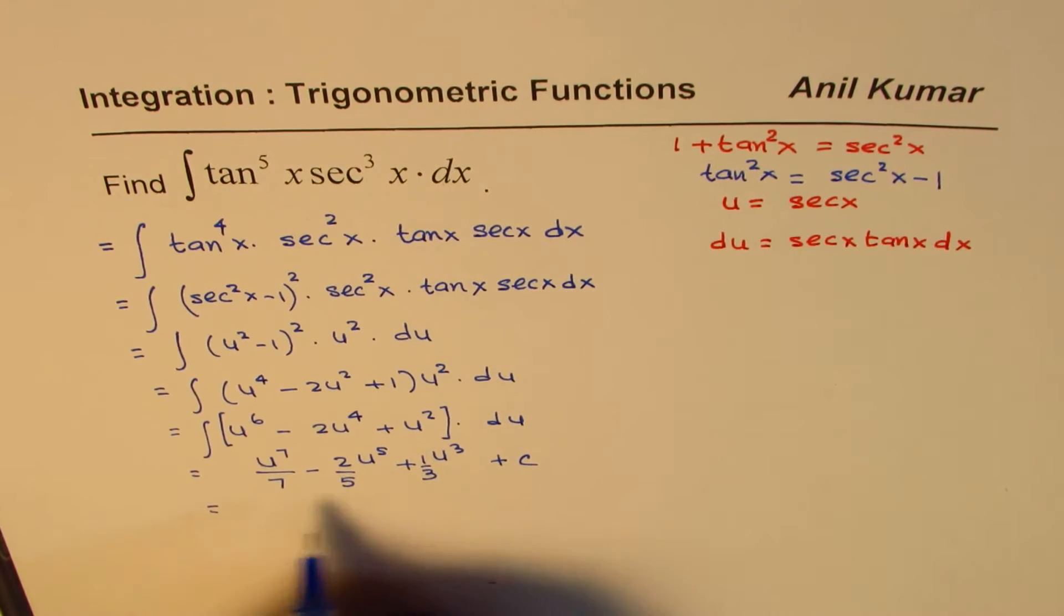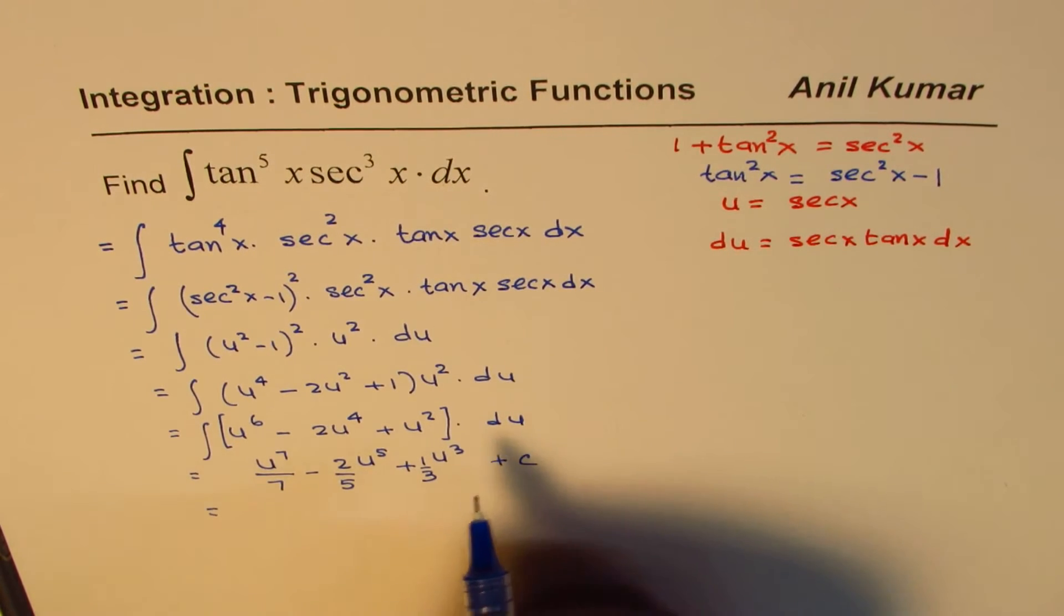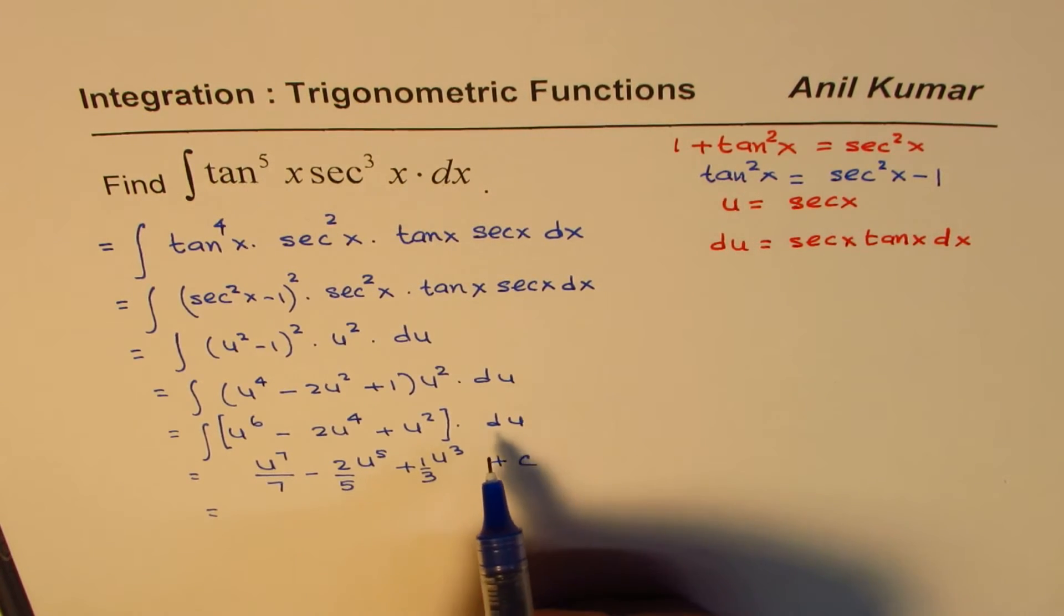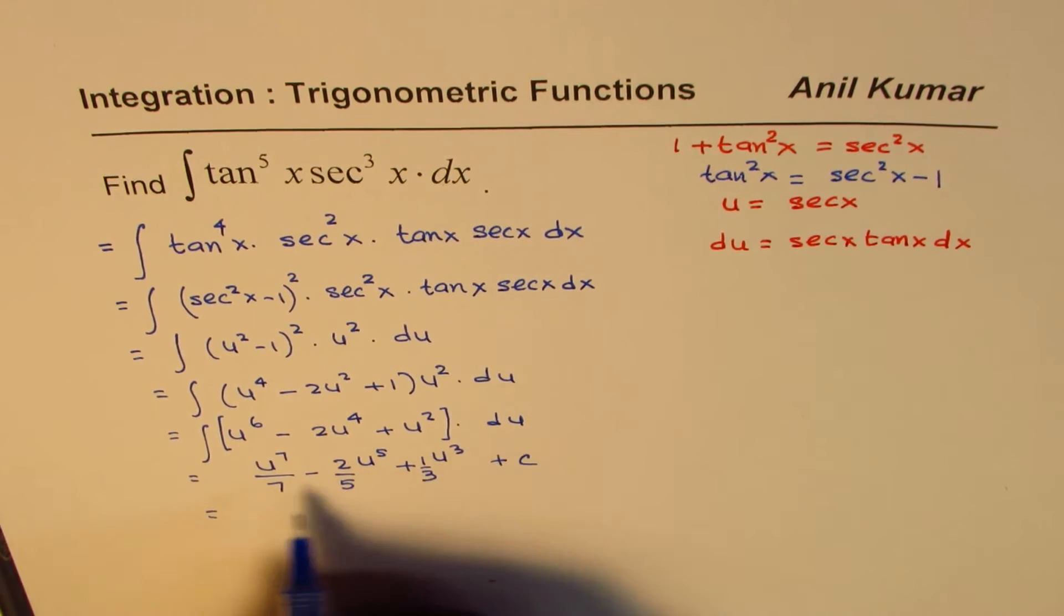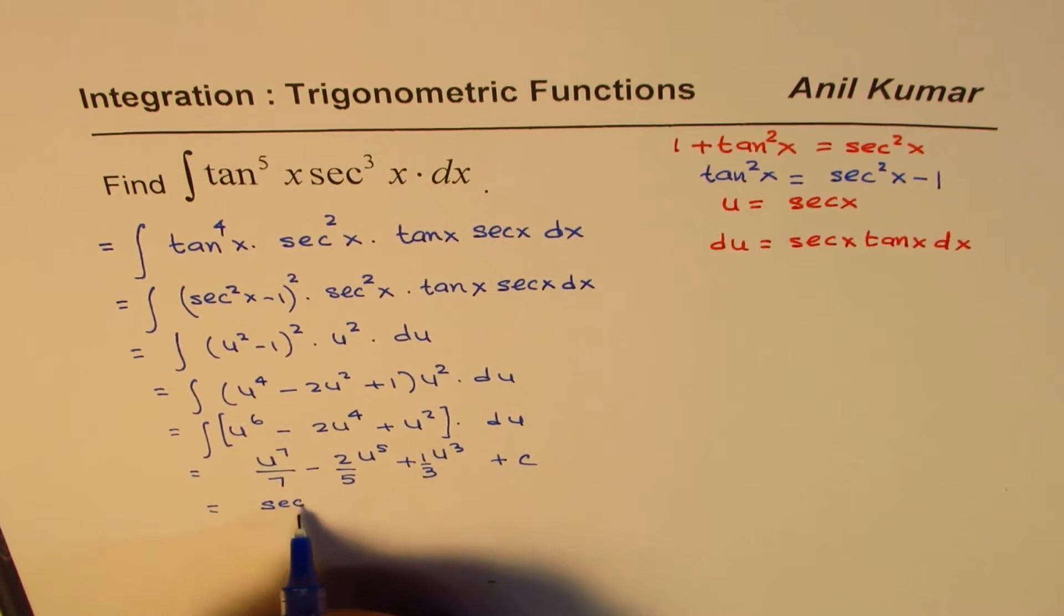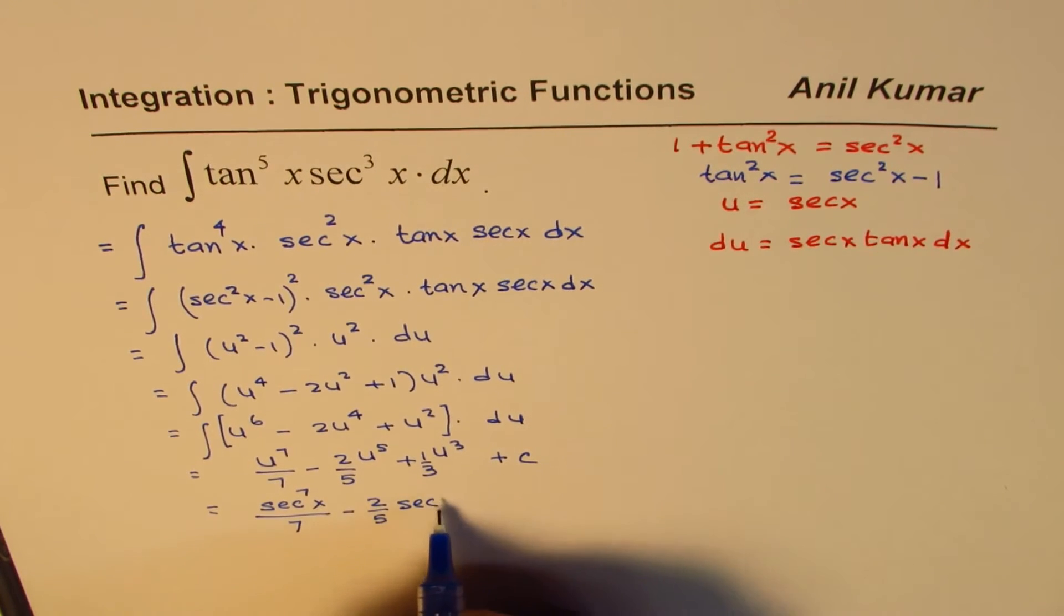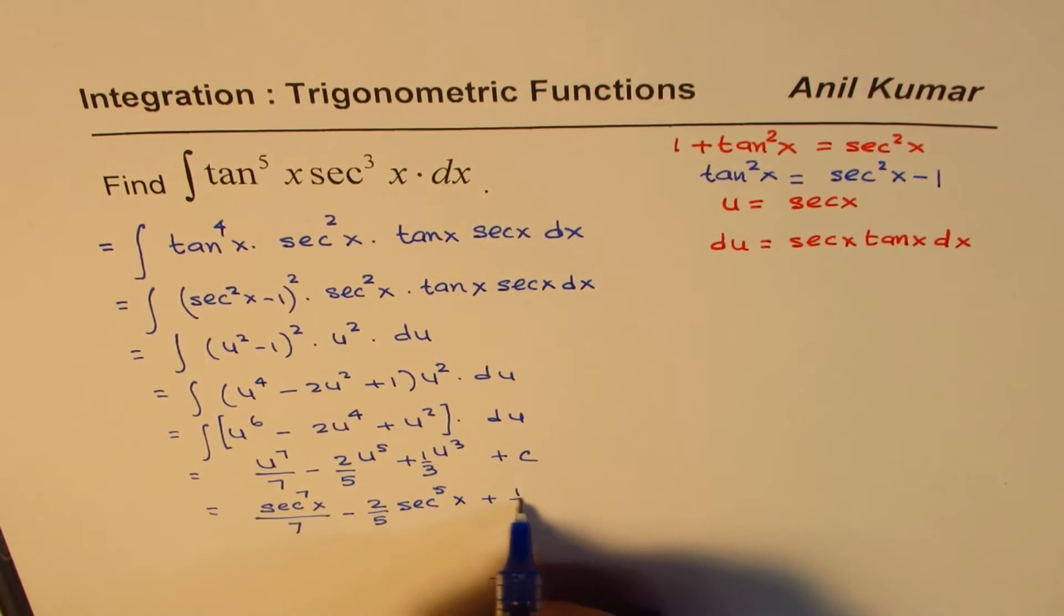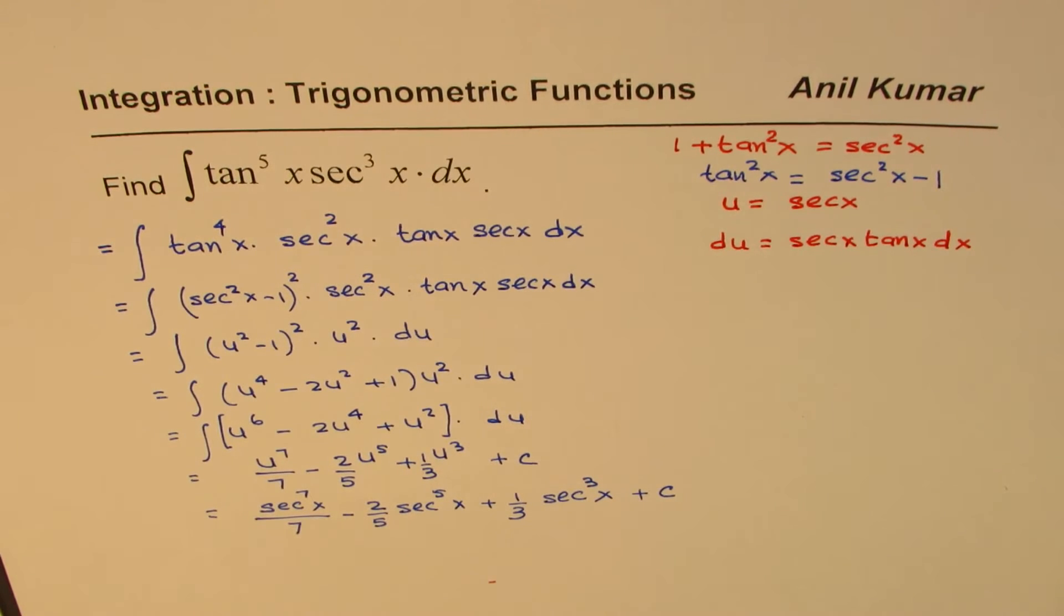Now we will replace u with secant x to write down our answer. So we have the answer as secant to the power of 7 x over 7 minus 2 over 5 secant to the power of 5 x plus 1 over 3 secant cube x plus c. So that is how you could integrate that.